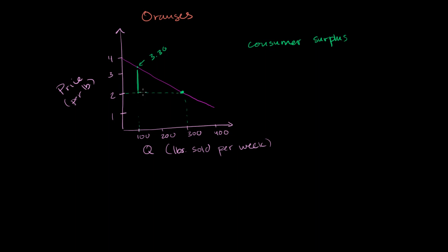is going to be $3.30 minus the $2. So that person who bought that 100th pound, not all the 100 pounds, just that 100th pound, got a consumer surplus of $3.30 minus $2, which is a $1.30 consumer surplus.